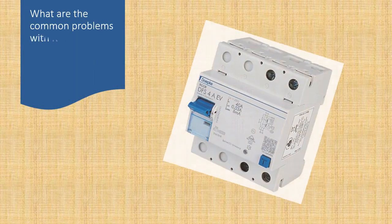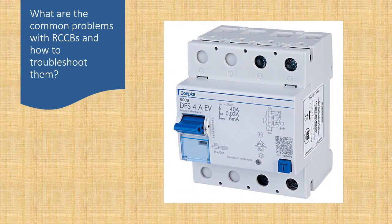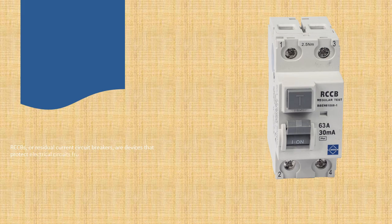What are the common problems with RCCBs and how to troubleshoot them? RCCBs, or residual current circuit breakers, are devices that protect electrical circuits from leakage currents, short circuits, and overloads. They work by detecting any imbalance between the live and neutral wires, and tripping the circuit if the difference exceeds a certain threshold. RCCBs are essential for safety and preventing electrical shocks and fires.